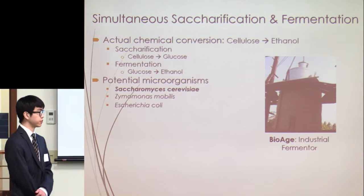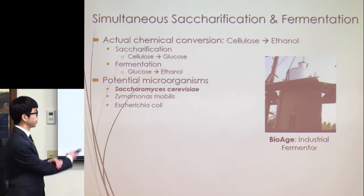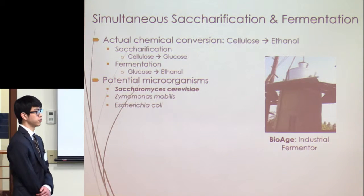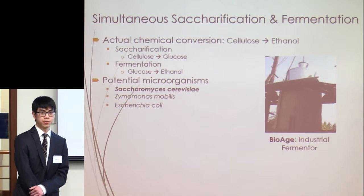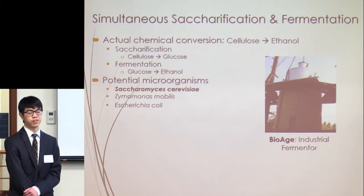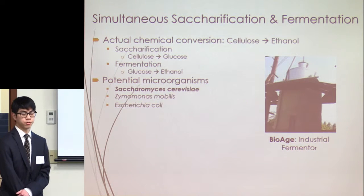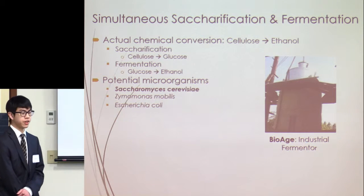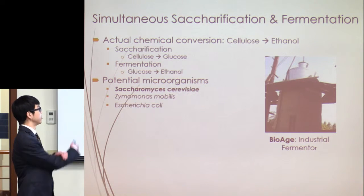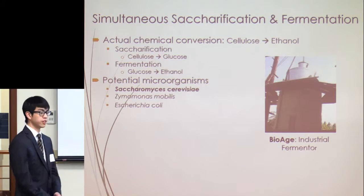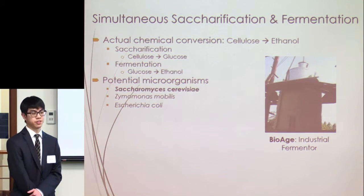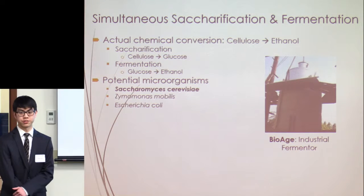The slurry mix coming out of the jet cooker is sent to the bioreactor, where the actual chemical conversion of cellulose into ethanol happens. This breaks down into two parts: saccharification, which is the breakdown of cellulose into glucose, and fermentation, which is the conversion of glucose into ethanol. Both are enzymatic processes. We use the cell line Saccharomyces cerevisiae — Brewer's Yeast — which is the most commonly used in industry and very well established for fermentation.